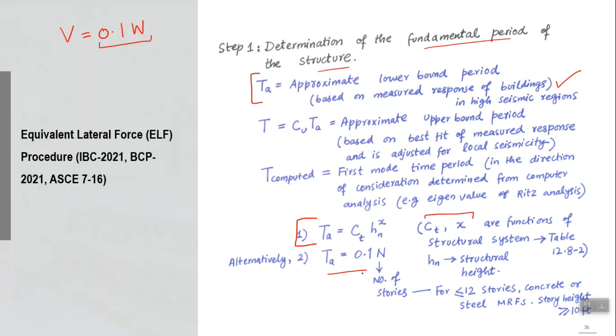Alternatively, you can use 0.1 times number of stories, but that is only when you have a structure with concrete and steel moment resisting frame with a story height greater than or equal to 10 feet and the number of stories is less than 12.